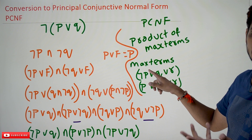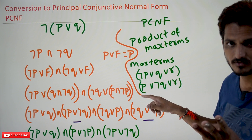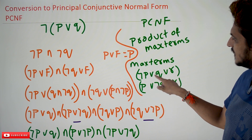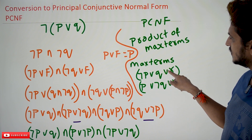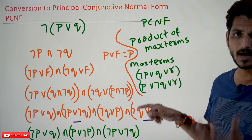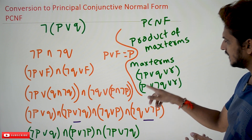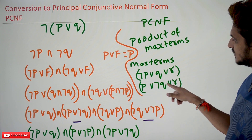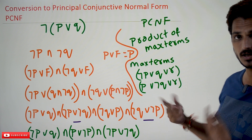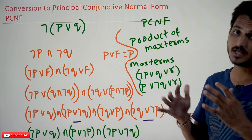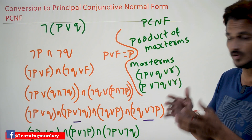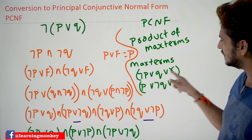Max terms look like this: if you have three variables — negation p disjunction q disjunction r — this is one max term. p disjunction negation q disjunction r — this is another max term. Like that, max terms contain all the variables.